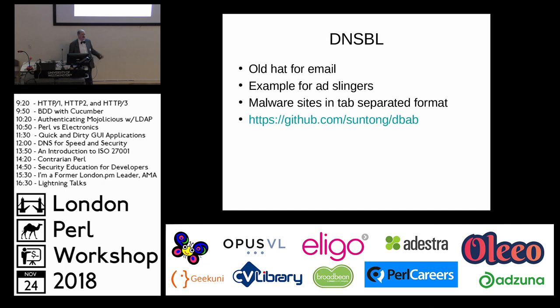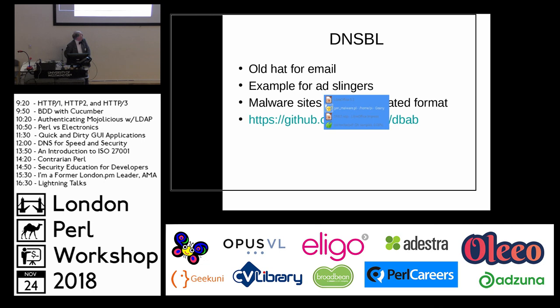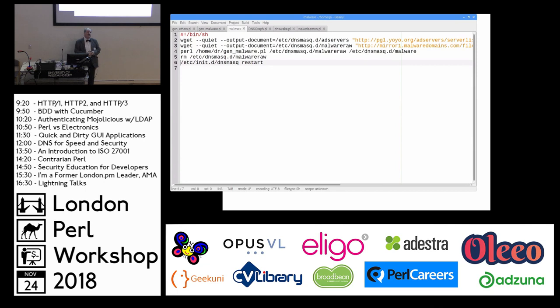Since then, someone has put up code on GitHub that does exactly the same thing — the same download, also converting it into dnsmasq format. I've also set up a little cron job — you can put this anywhere from cron yearly to cron minutely depending on how paranoid you are. It downloads the ad servers list, downloads the raw malware list, runs the Perl over it creating the malware file in dnsmasq format, and then deletes the raw file. Couldn't be easier.